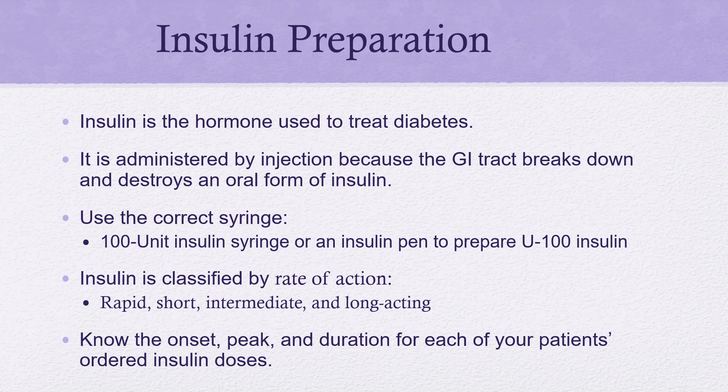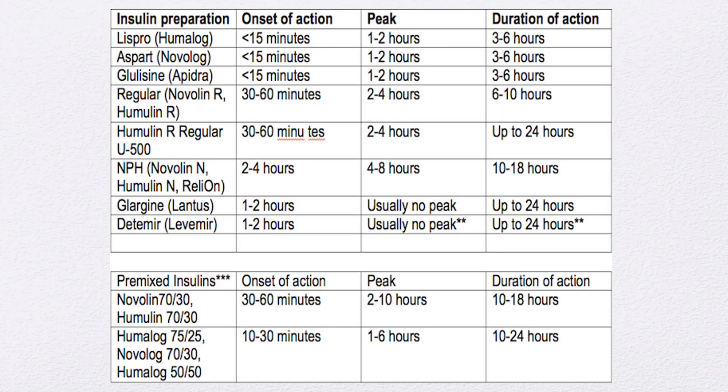Let's talk about insulin preparation. If you need to administer insulin, when do you give it? Your patient got their breakfast tray, you checked their blood sugar and it was 300 — you know you need to give insulin. The question is when to give it in relation to when they eat. Novolog states the onset is less than 15 minutes, so if you administer it and they don't eat within 15 minutes, they could have a hypoglycemic episode. When you administer it, they need to start eating within 15 minutes.